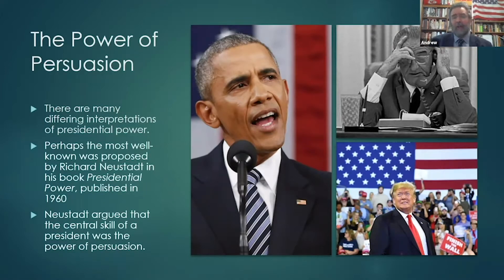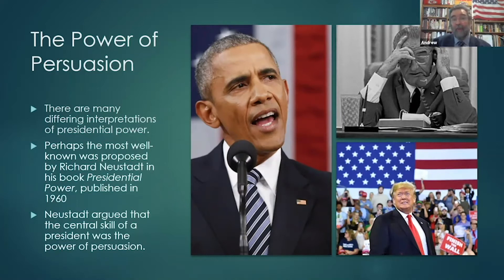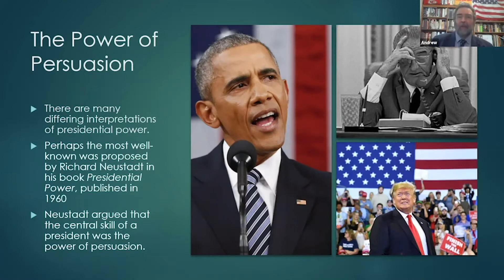Now interestingly, lots of academics have interpreted presidential power in different ways. One of the most influential academics to do this was a man called Richard Neustadt, who published a book at the beginning of the 1960s called Presidential Power. In this book, what Neustadt said was the key power that any president needed was the power of persuasion — the ability to persuade those who worked for you to pursue your agenda, to persuade the media, to persuade the American public.